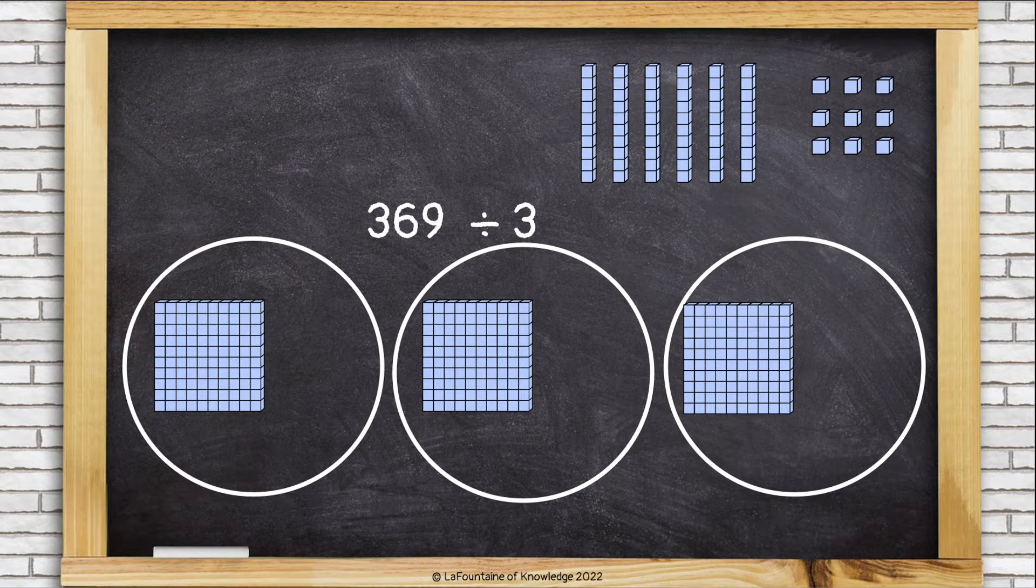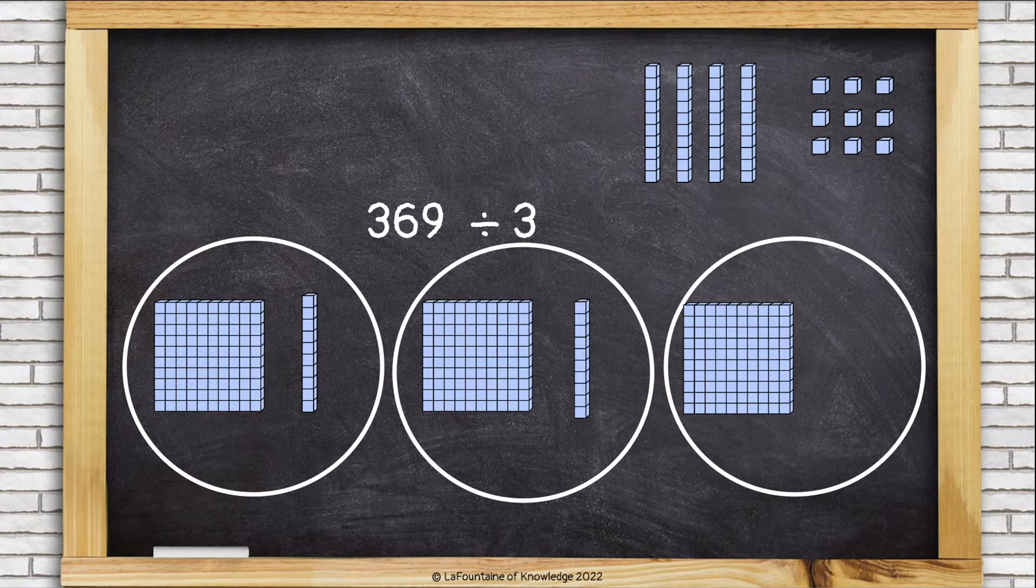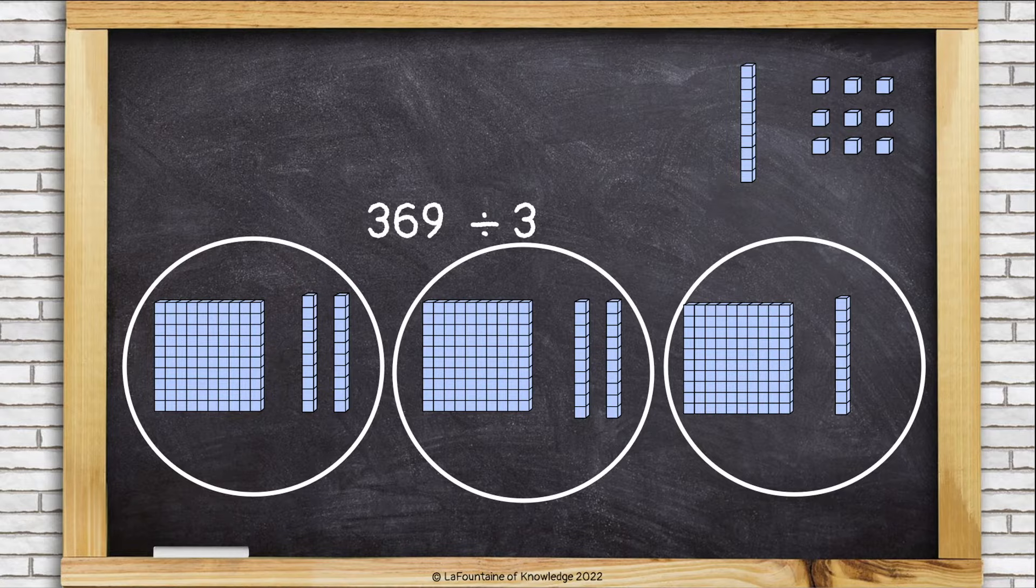Now let's divide up our tens. One for you, one for you, one for you. Oh, I can go back around and give them each another one.